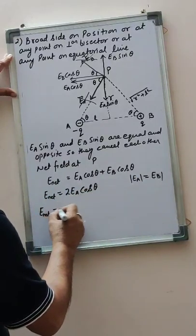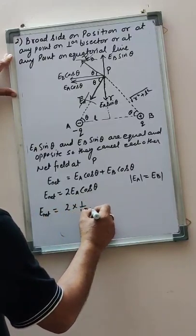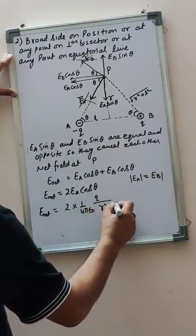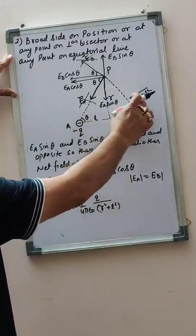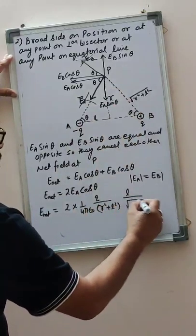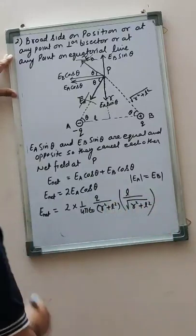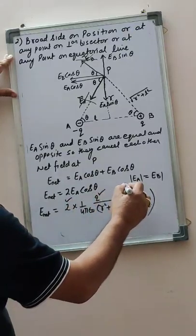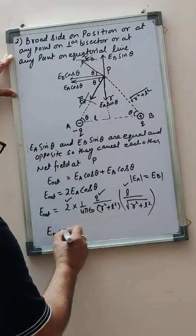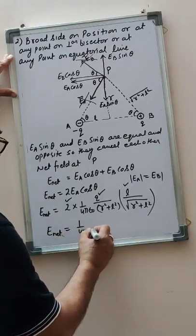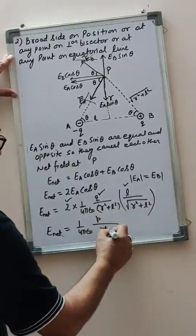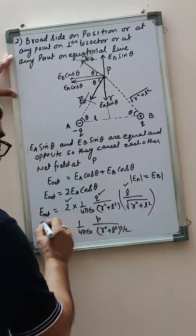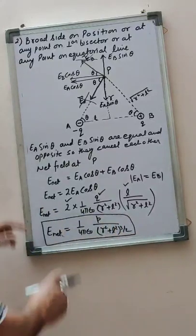Substituting values: E net equals 2 times 1 by 4 pi epsilon naught, Q upon R square plus L square, and cos theta equals base upon hypotenuse — base is L, hypotenuse is under root R square plus L square — so cos theta is L upon under root R square plus L square. Therefore, net field equals 1 by 4 pi epsilon naught times 2QL — that is P — upon R square plus L square to the power 3 by 2. This is the net electric field in broadside-on position.